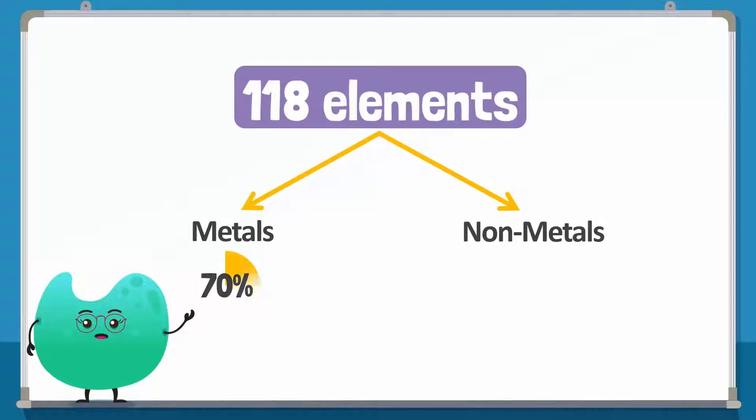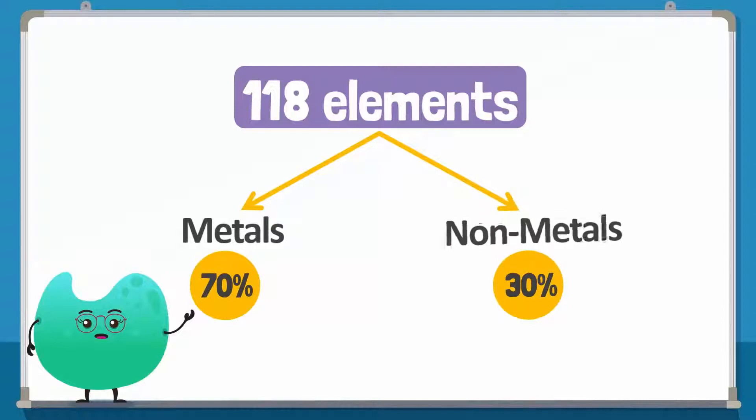About 70% of the elements are metals, while the remaining 30% are non-metals. Metallic elements share some similar properties, while non-metallic elements have their own set of properties.